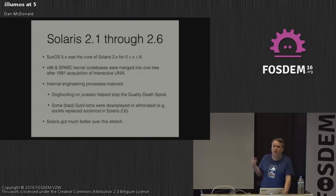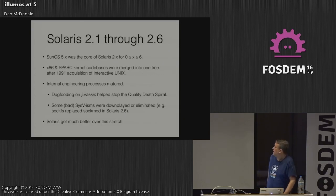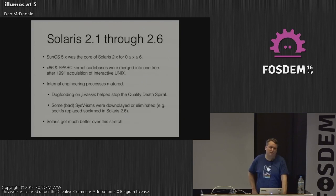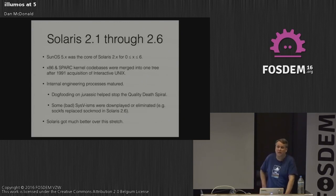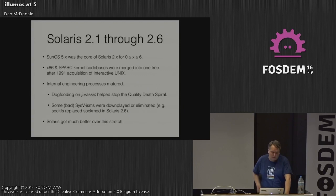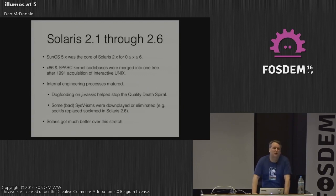There's a great blurb on the Illumos page about how you stop the quality death spiral: you put it on all the time and you run it. Nowadays it's called continuous delivery, but this was going on in the early 90s.